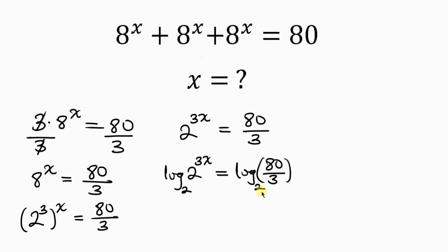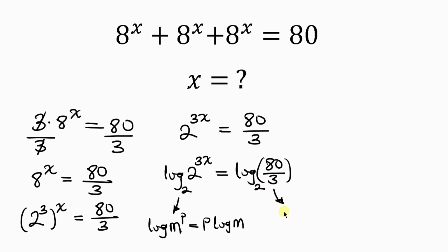Our next step will be to apply the properties of logarithm to both sides. On the left-hand side, the number is carrying a power, so we apply the power law of logarithm: the log of m raised to power p can be written as p times log m. On the right-hand side, when the numbers are dividing — m divided by n — this can be written as the log of m minus the log of n.